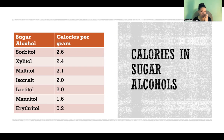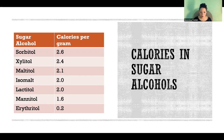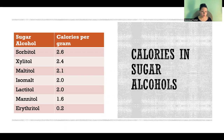These are some of the more common sugar alcohols: Sorbitol at 2.6 calories per gram, Xylitol at 2.4, Maltitol at 2.1, Isomalt at 2, Lactitol at 2, Mannitol at 1.6, and Erythritol at only 0.2 calories per gram.